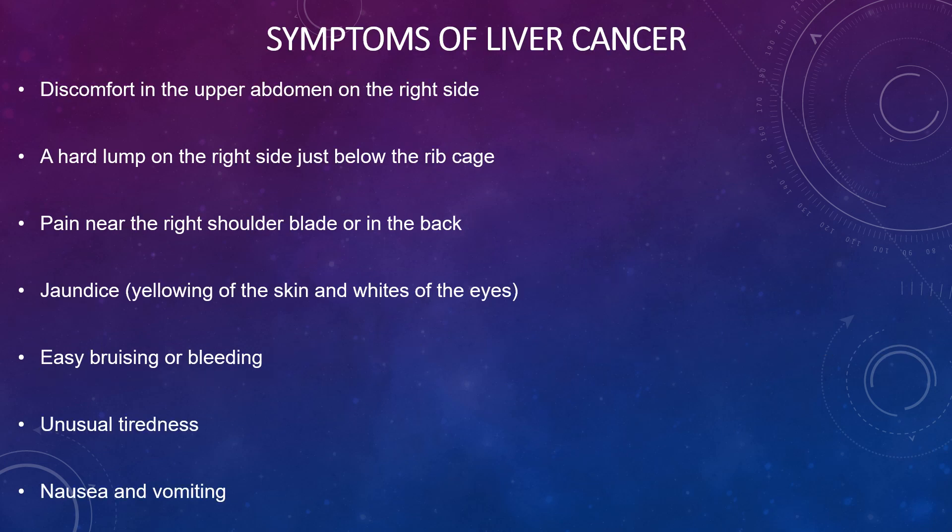Symptoms of liver cancer include discomfort in the upper abdomen on the right side, a swollen abdomen, hard lumps, pain near the right shoulder blade, jaundice (yellowing of the skin and whites of the eyes), easy bruising or bleeding, unusual tiredness, nausea, vomiting, and loss of appetite and weight loss.